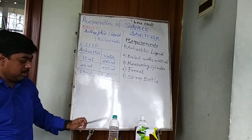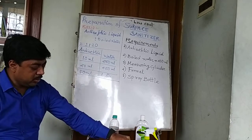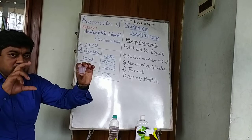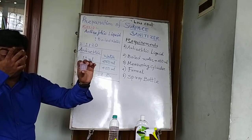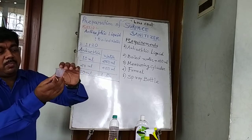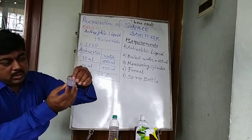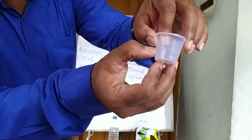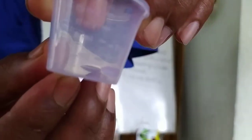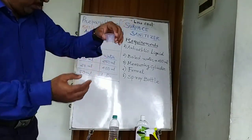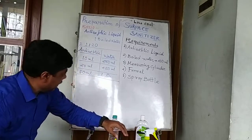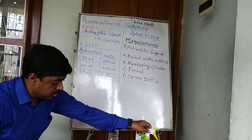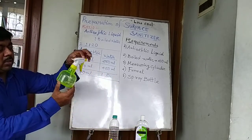Next, we need a measuring cylinder. This is available with many cup syrups and other syrups you purchase from medical shops — the measurements are given in a proper way on it. The other requirements are a funnel and, last but not least, a spray bottle. All of these are market-available low-cost items.